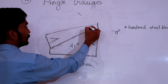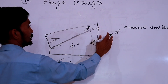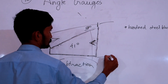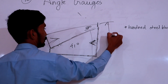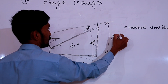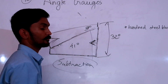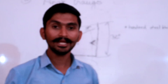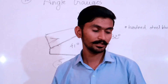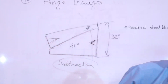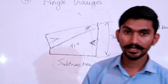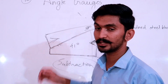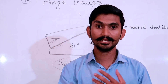Now this is 41 degrees and this is 9 degrees, so the resulting angle is 32 degrees — 41 minus 9 equals 32 degrees. This is addition and subtraction of angle gauges.